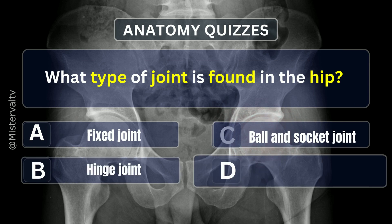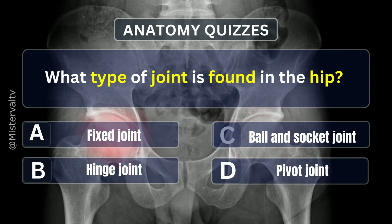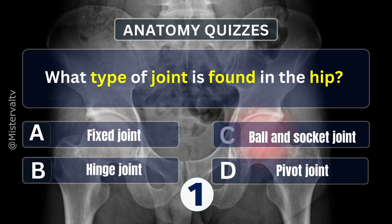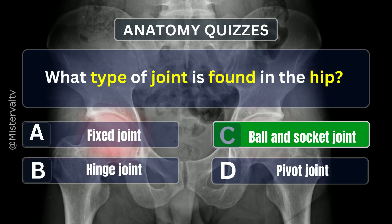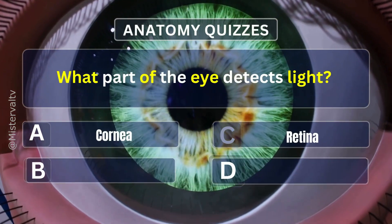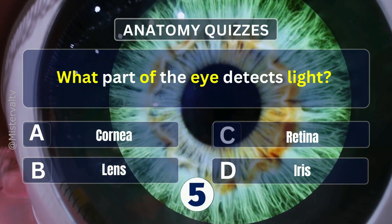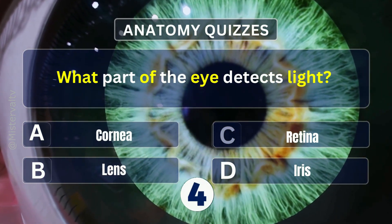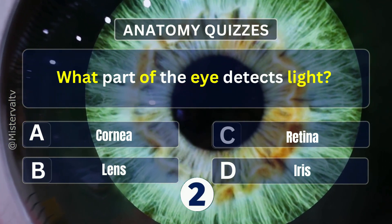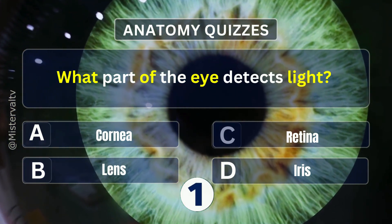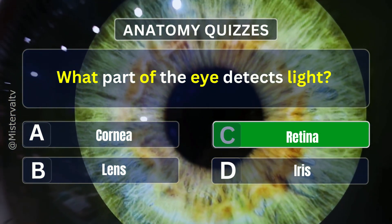What type of joint is found in the hip? Answer. C. Ball and socket joint. What part of the eye detects light? Answer. C. Retina.